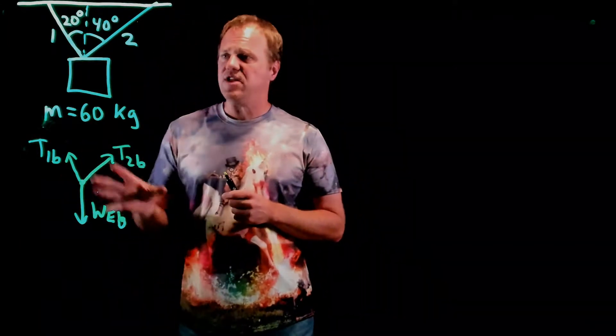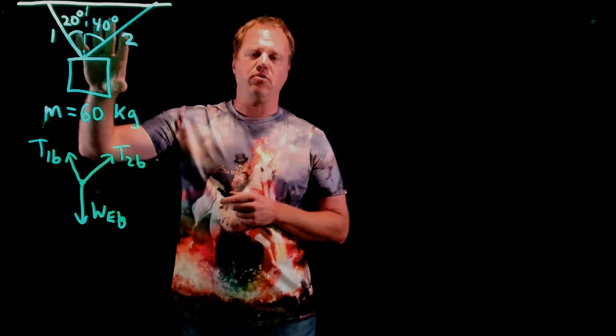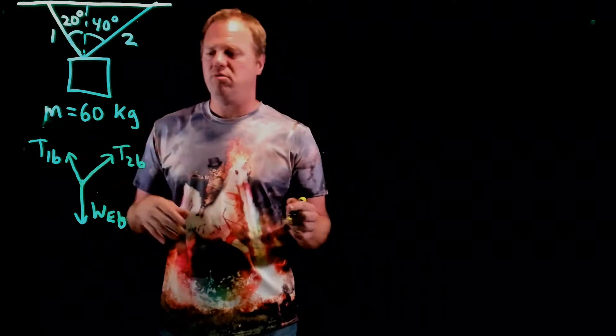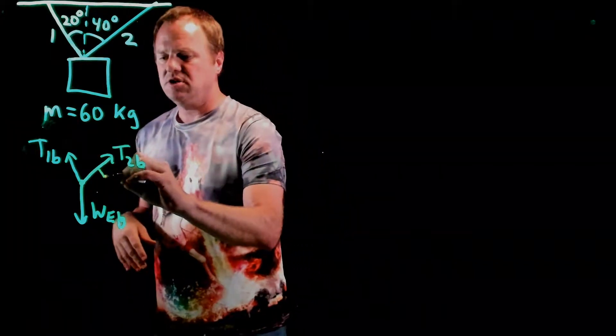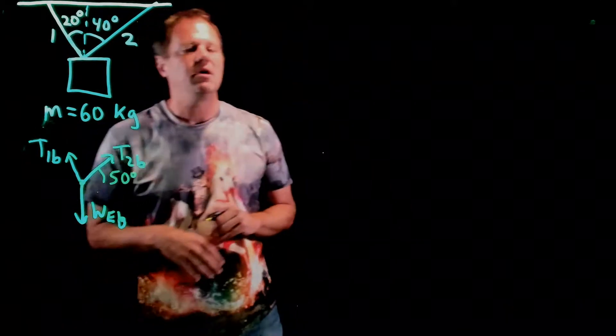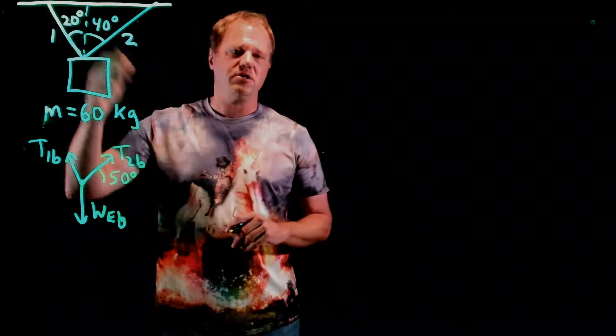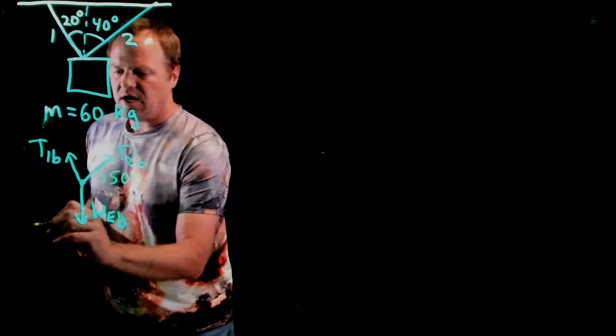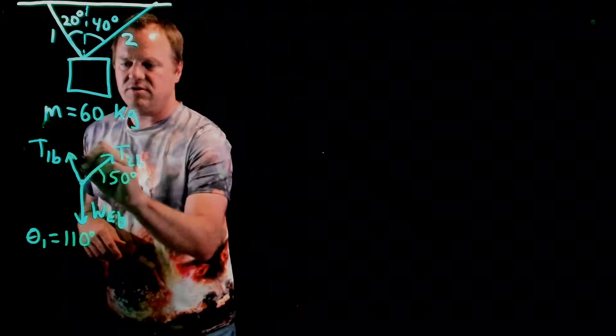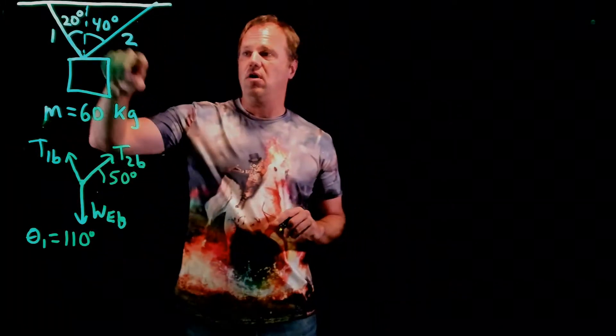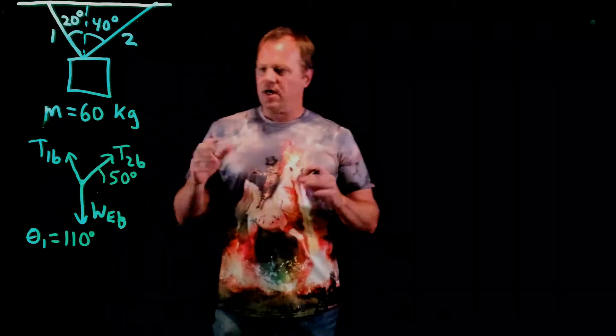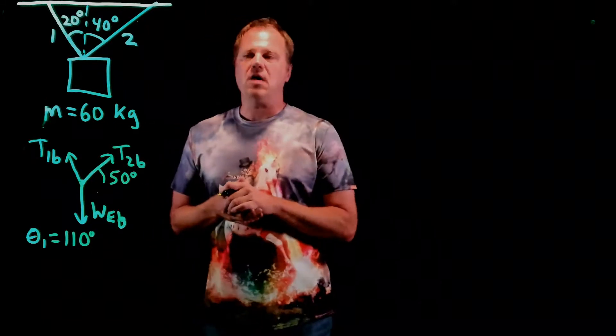One thing that I don't like about these angles is that they're measured with respect to the vertical axis. I prefer my angles to be measured counterclockwise with respect to positive X. For example, for T2 I would assert that it's 50 degrees counterclockwise from positive X as opposed to 40 degrees clockwise from the Y axis. Likewise, theta 1, the angle for this vector, is 110 degrees counterclockwise from the positive X axis. So there's my free body diagram and then a little bit of tidying up in terms of the directions.